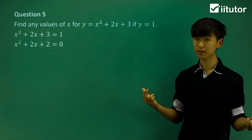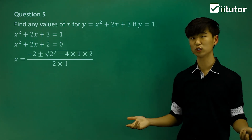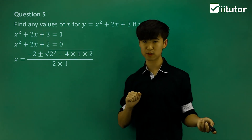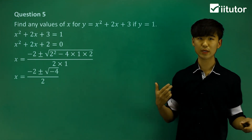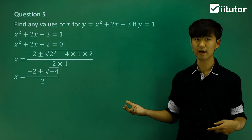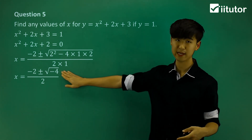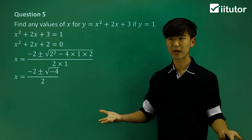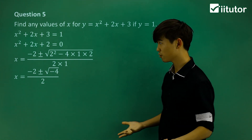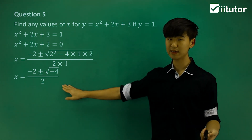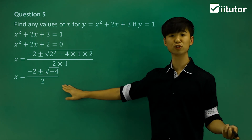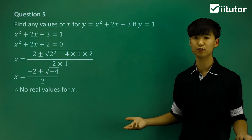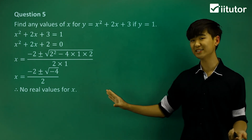So what we're going to do is again use the quadratic formula. In this case, if we simplify what's under the root, we get a negative 4 under the root. And as you know, we can't have a negative number under a square root, meaning there are no solutions for x — x has no real values when y = 1. And that's the answer.